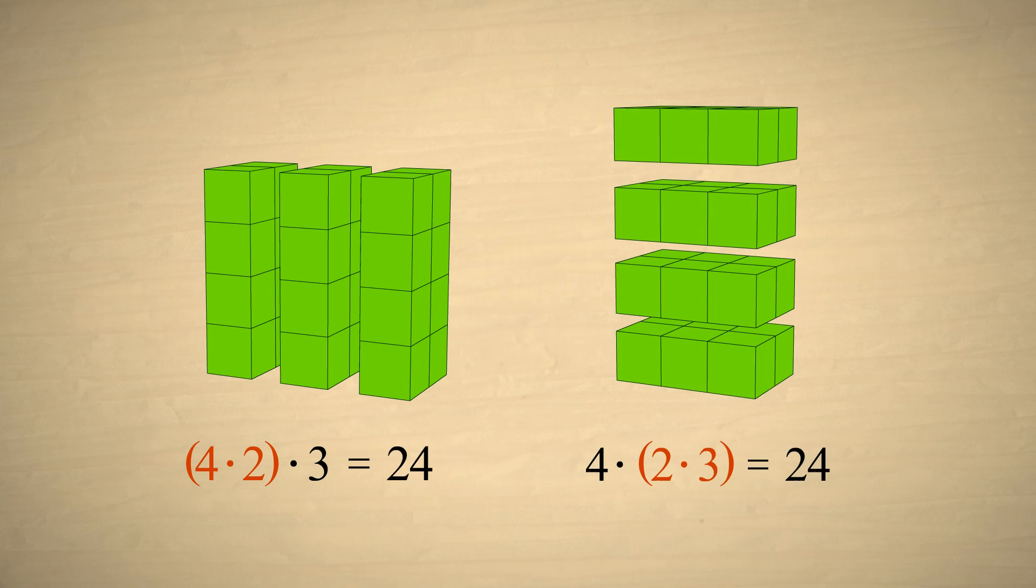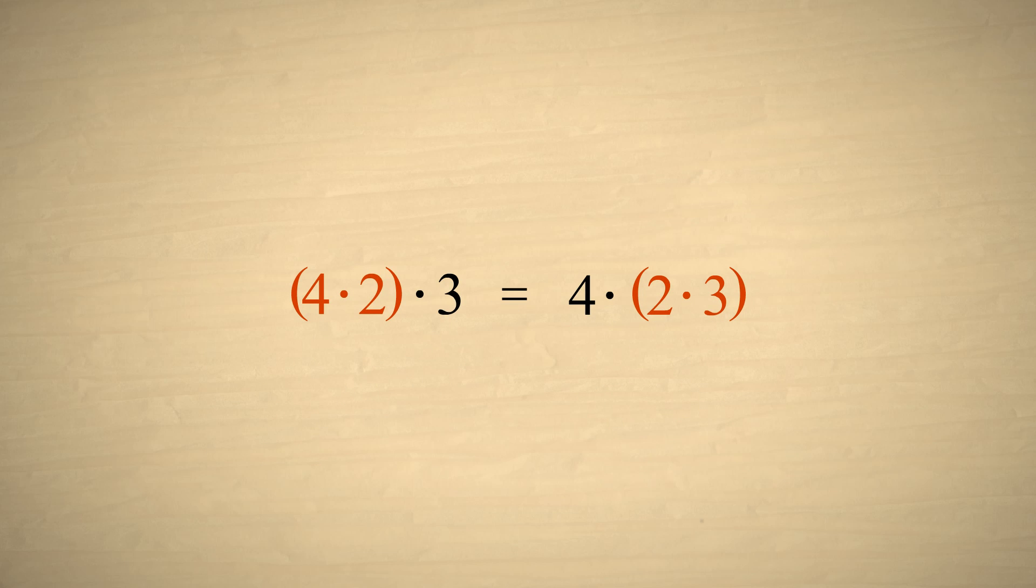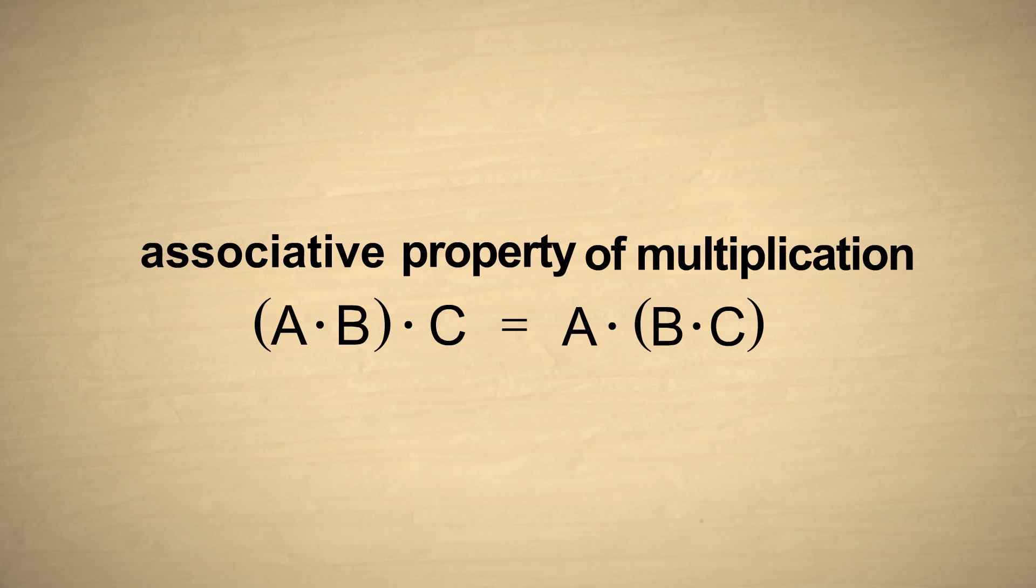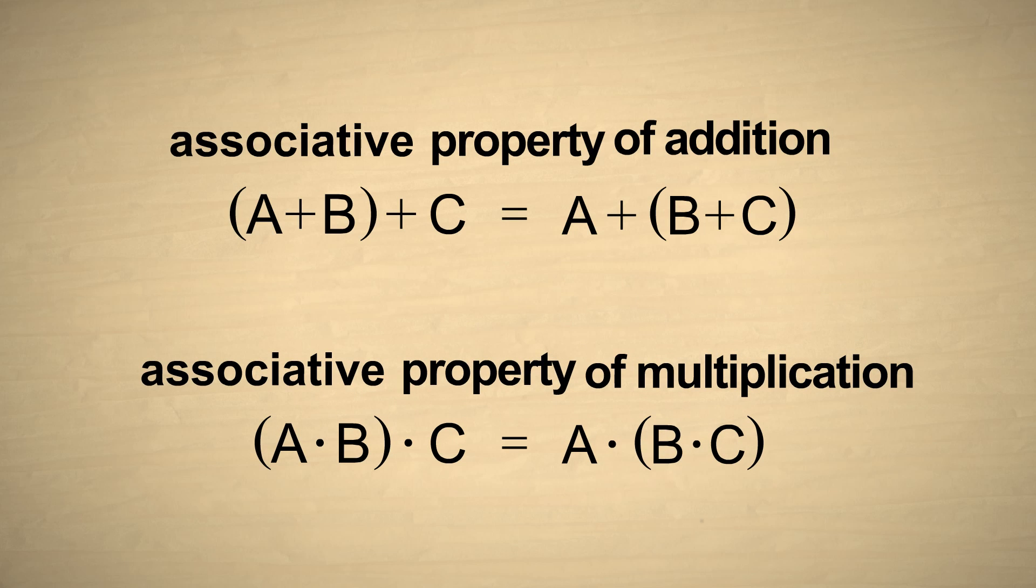Either way we group the numbers, we still get the same result. If we use the letters A, B, and C instead of numbers, then we can write this property in a more general way. So the associative property applies to both addition and multiplication.